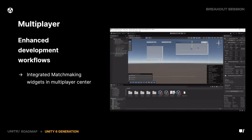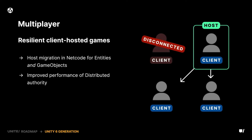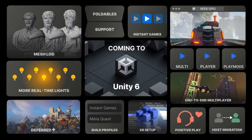The section on multiplayer was very cool — we're getting enhanced development workflows with integrated matchmaking. There's also a really cool resilient client-hosted game feature: if the host disconnects, the session moves to another client in the same game instead of shutting everything down and kicking everyone off. Very cool feature. That wrapped up the Unity 6 section, though obviously that wasn't everything — just the things that really stood out to me.